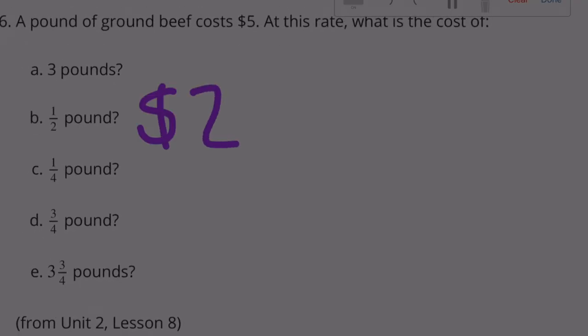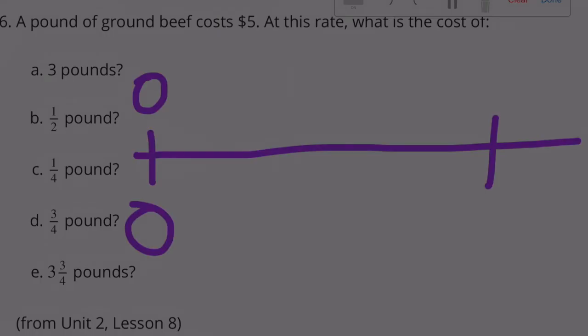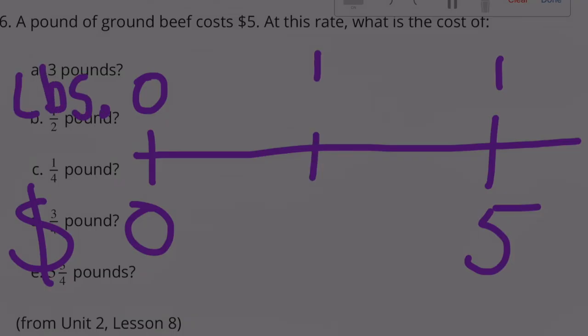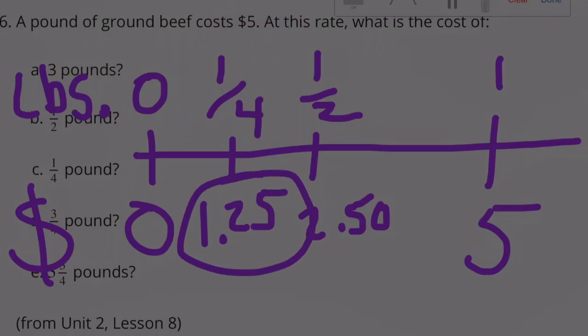A half a pound would be $2.50. C. 1/4 of a pound. 0, 0, 1, and 5. So we have the dollars down here and the pounds up here. This represents a half a pound, that is $2.50. A fourth of a pound, exactly between a half a pound and 0 pounds. So what's halfway between $2.50? $1.25. So 1/4 of a pound would be $1.25.